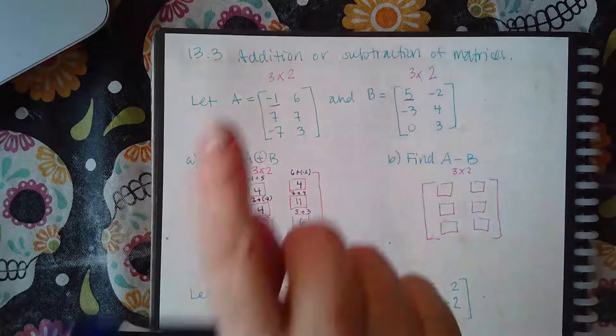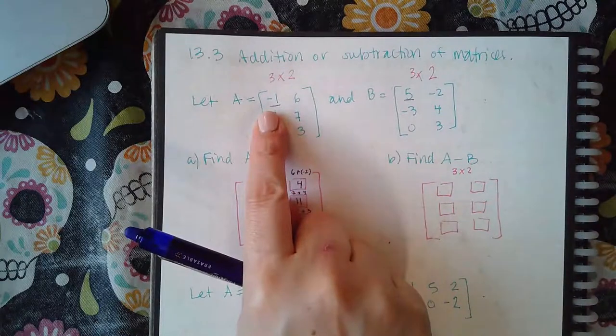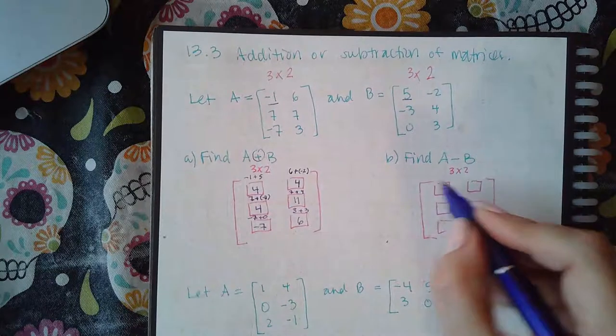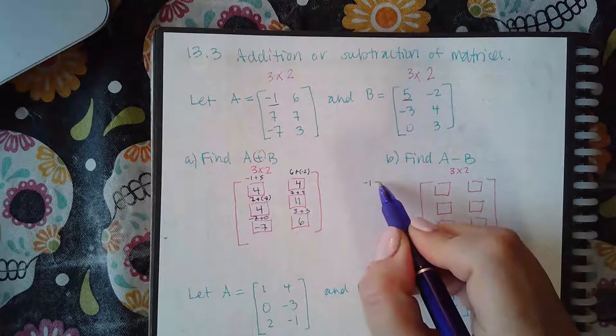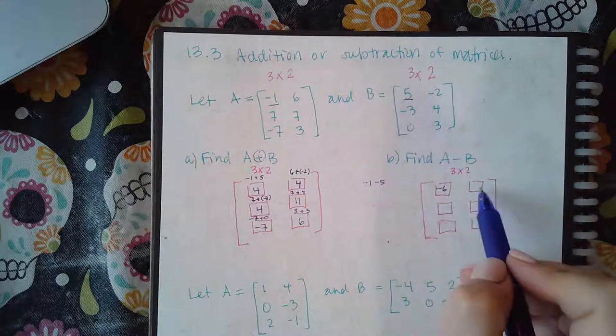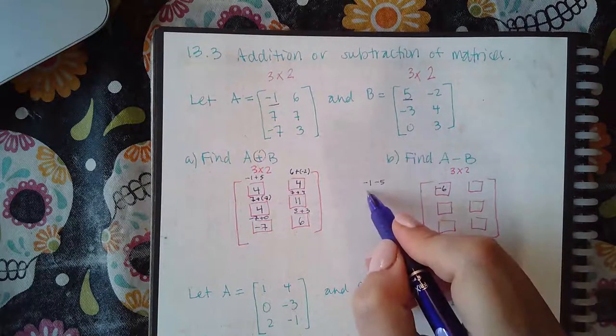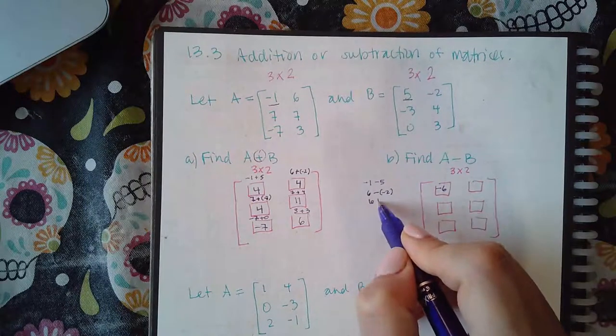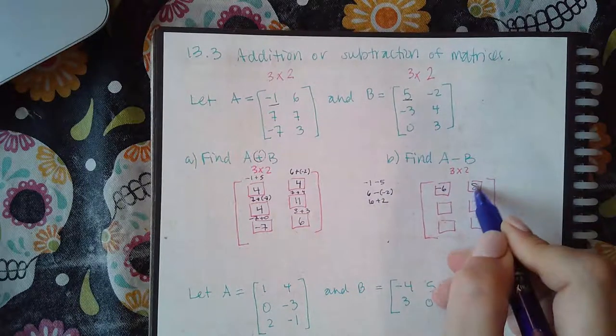You're going to take the quantities in matrix A and subtract the quantities in matrix B. So, for this first entry, it's going to be negative one minus five, which is negative six. For this second entry over here, it's going to be six minus a negative two, which actually turns into six plus two, so this is eight.